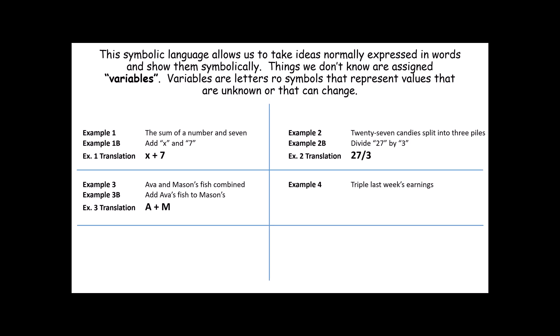The word triple is interesting because it not only means an operation, but also means a number. Triple means multiply by three. So this one says: take last week's earnings and multiply it by three, giving you 3E. Notice we don't normally write the times sign if it's a number right next to a variable. I used E for earnings because that reminds me of what I'm talking about, but that is not a requirement — you could have easily used X or N or M or anything else.